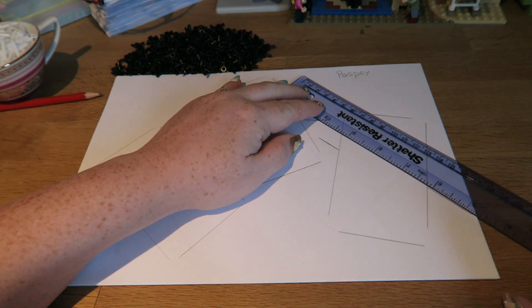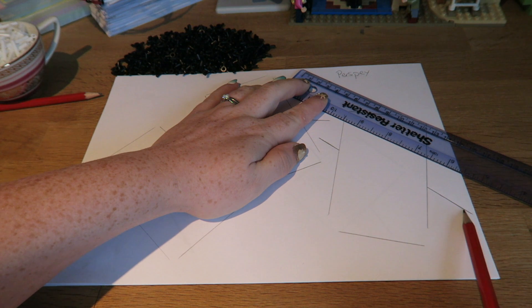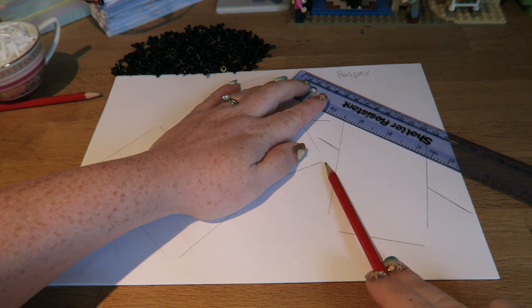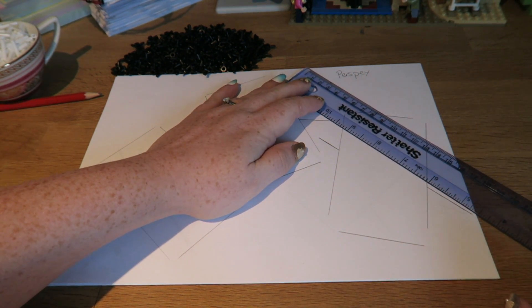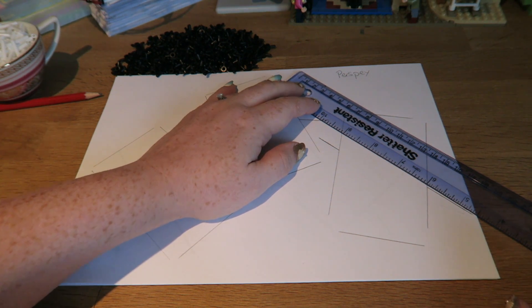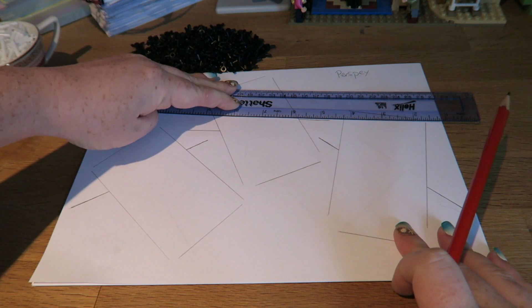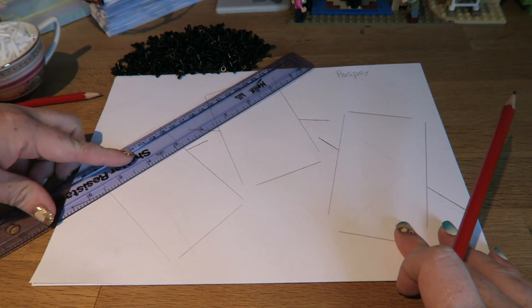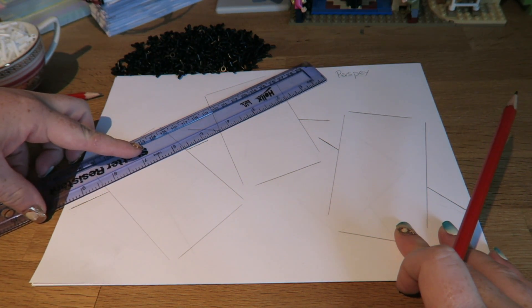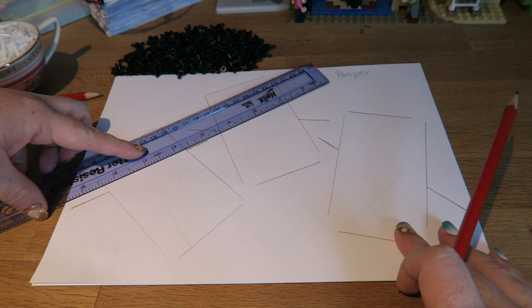I'm just going to put my ruler there, and the first thing I want you to notice is that this is where the light went in, this is where the light came out of the Perspex block. You'll notice that the light lines don't line up. The ray of light has changed place as it has gone into and out of the box, and this is refraction.